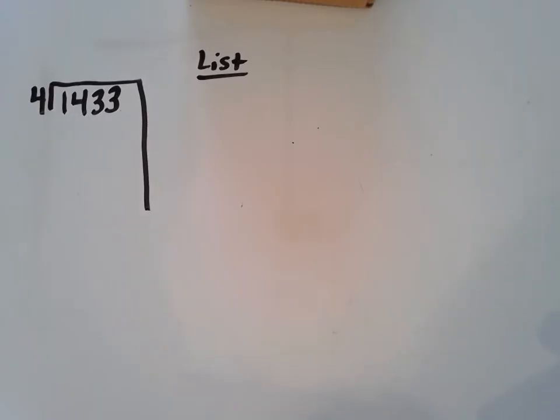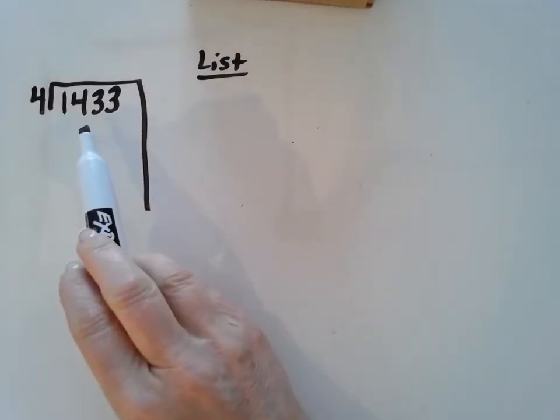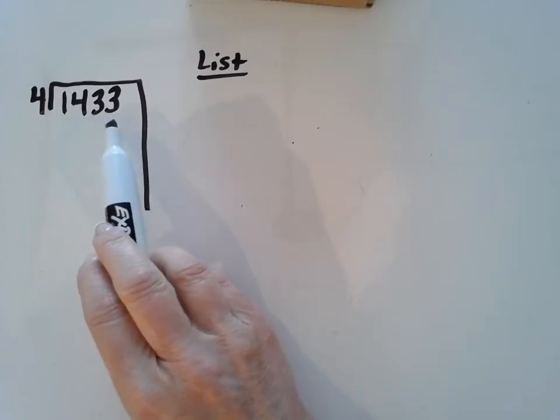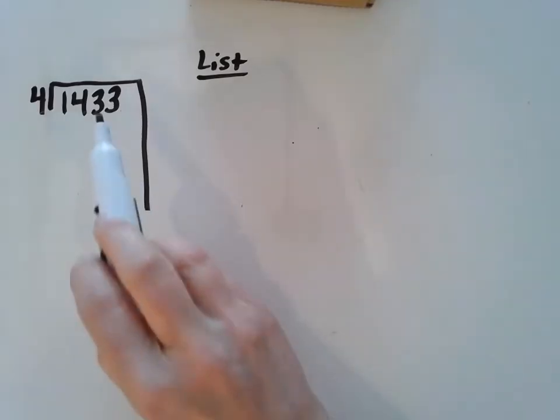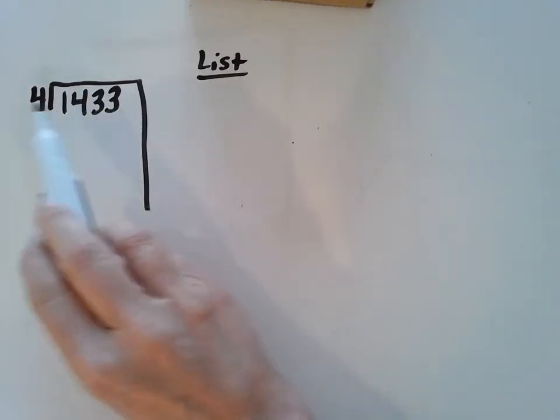So in other words, like in our problem we have here, the dividend is the number inside the box, 1,433, and your divisor is 4. So I'm going to divide this number by 4 today.